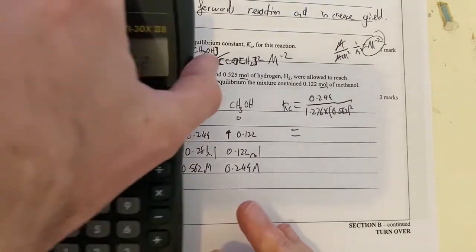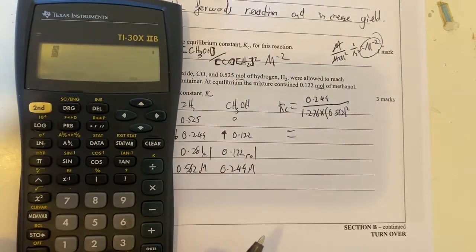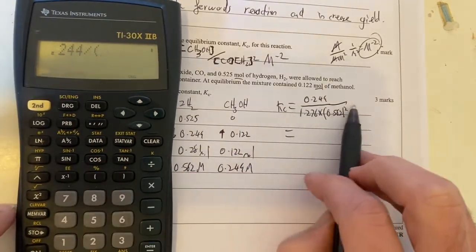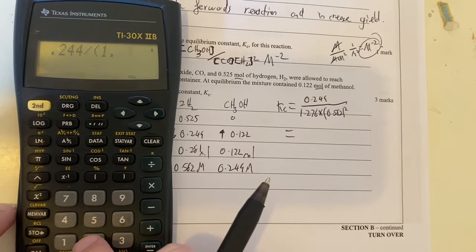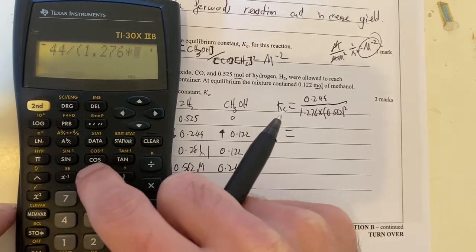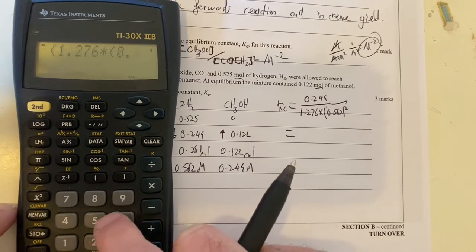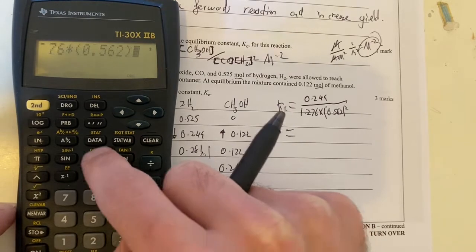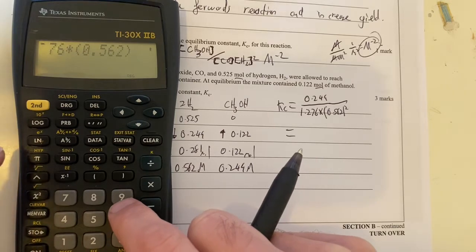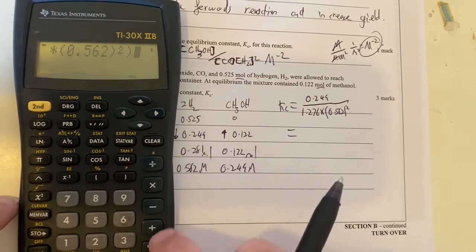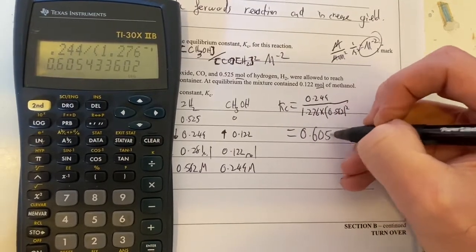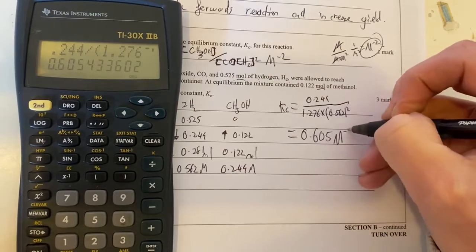So therefore, I'll get my calculator again. I'll go 0.244 divided by bracket, 1.276 times 0.562 bracket squared. Where am I? Squared. And close off that other bracket should give me an answer of 0.605 molar to the negative two.